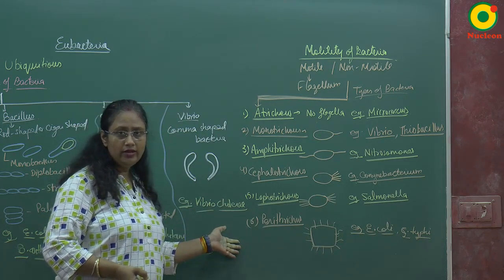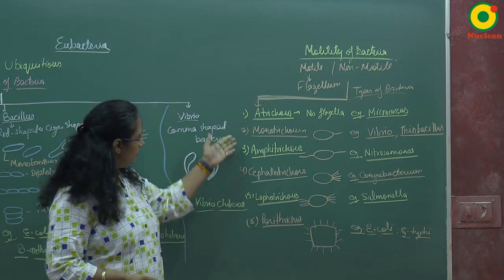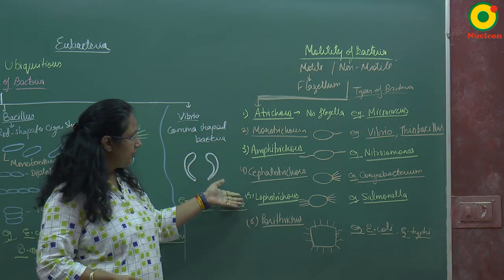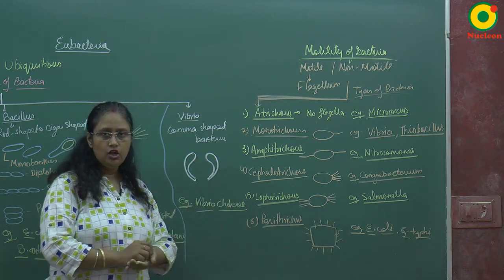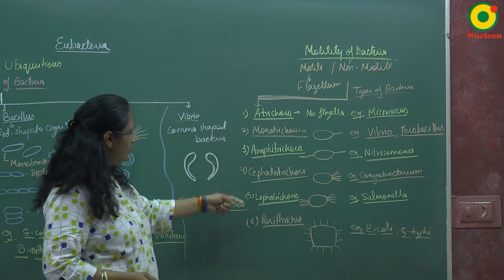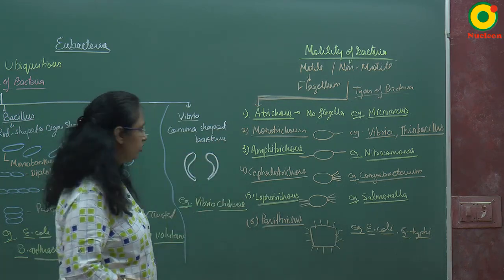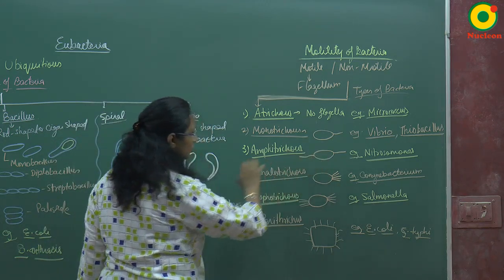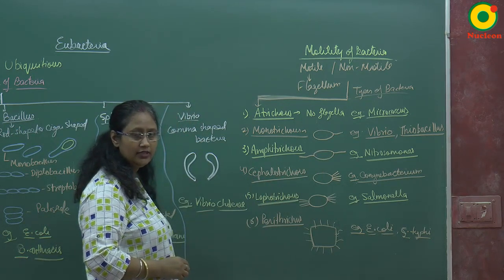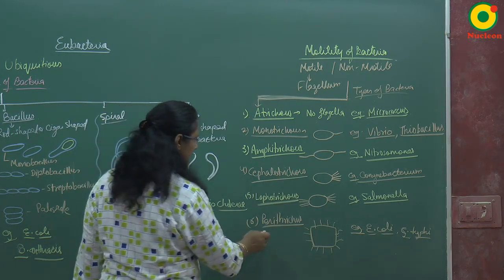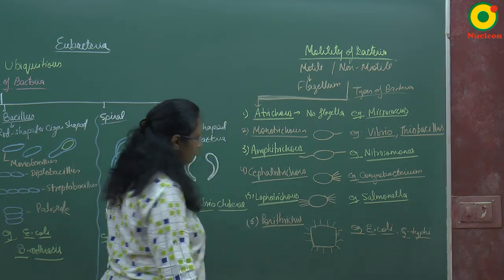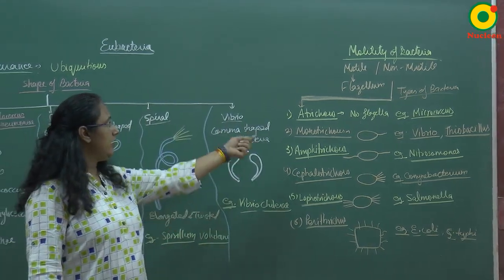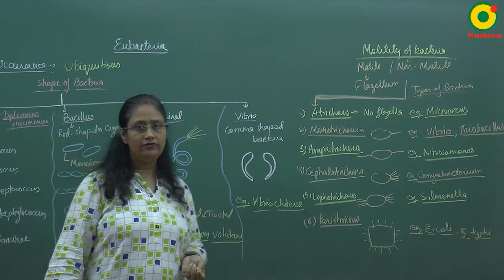Monotrichous, amphitrichous, cephalotrichous, and lophotrichous are polar bacteria because the flagella are at distinct positions. Peritrichous bacteria are non-polar because flagella are present all over the body. These are the types of bacteria on the basis of flagella.